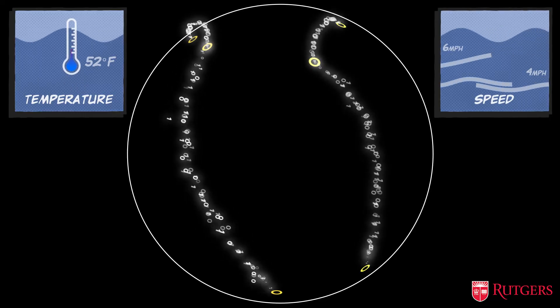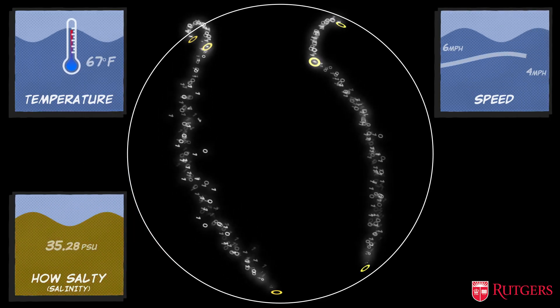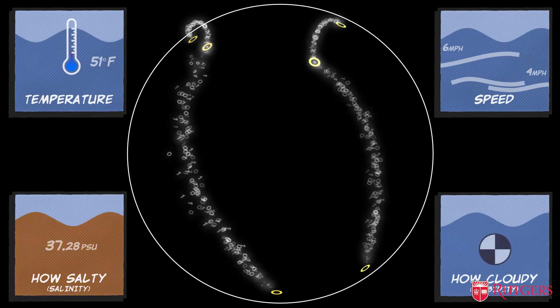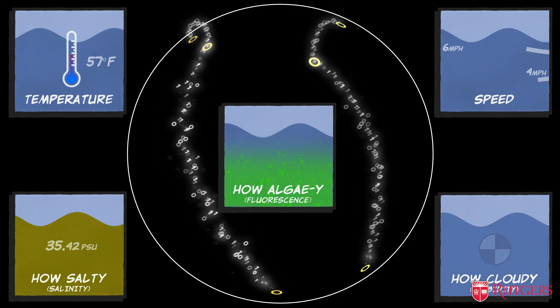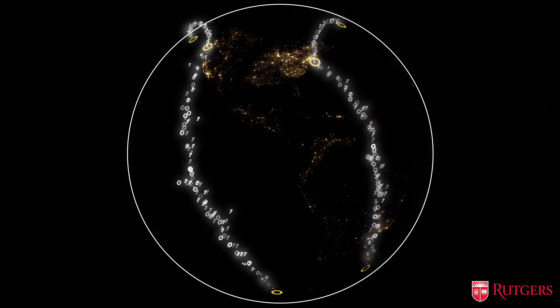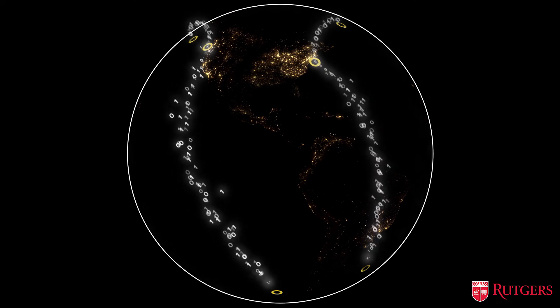measuring things like temperature, the speed of ocean currents, how salty it is, salinity, how cloudy it is, turbidity, and how algae-y it is, fluorescence.